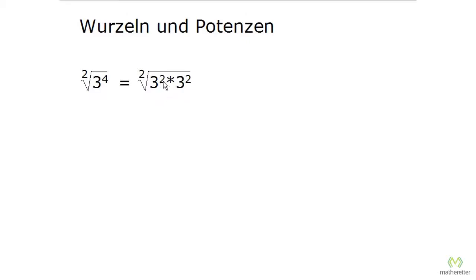Now we can figure that out. 3 squared is 9 and 3 squared is 9, so we get the 2nd root of 9 times 9. 9 times 9 we can write as a square, the 2nd root of 9 squared. Here the 2's match up and the 9 remains.